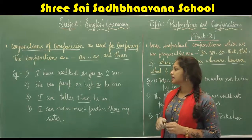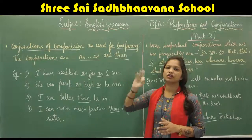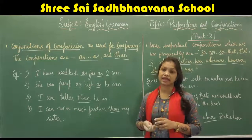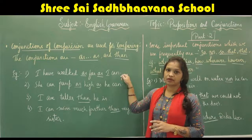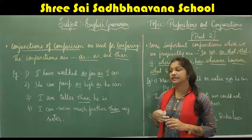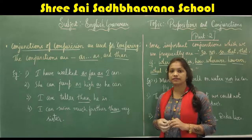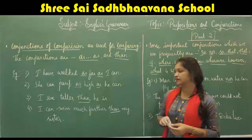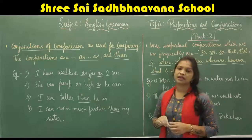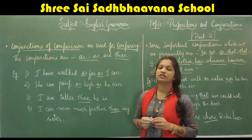More examples: 'She can jump as high as he can.' — a formal way of using 'as...as'. 'I am taller than he is.' 'I can swim much further than my sister.' The conjunctions of comparison — 'as...as' and 'than' — are used to compare things.